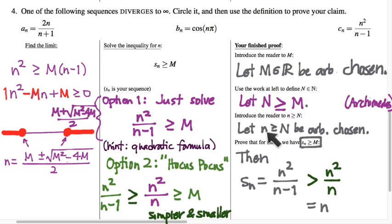But by assumption, n is greater than or equal to capital N, which in turn is greater than or equal to capital M. So I'm going to kind of draw a box around these two facts up here, because it's these two facts that we're going to draw upon to make our final comparison. To say that this is, in fact, greater than or equal to M, as we were trying to prove.